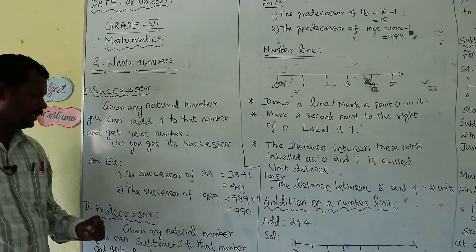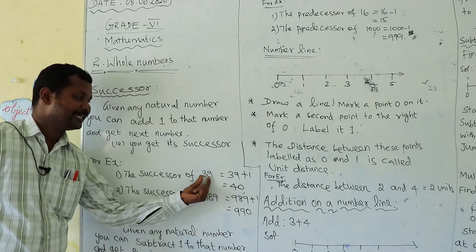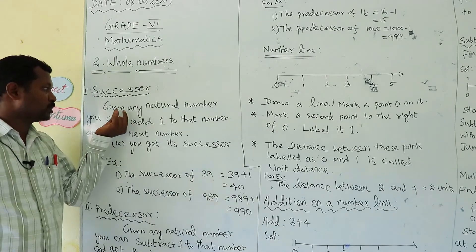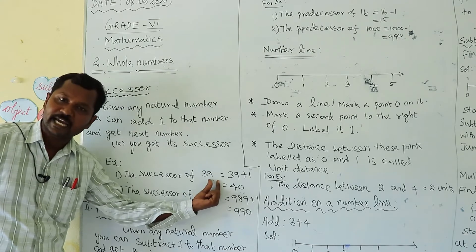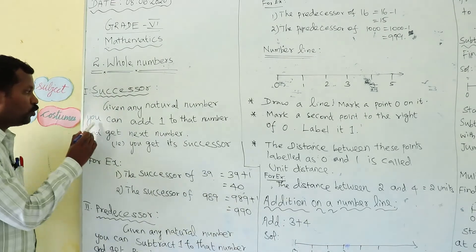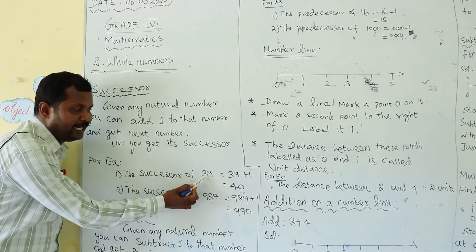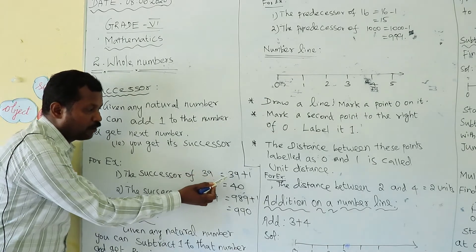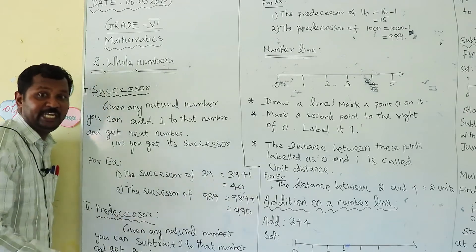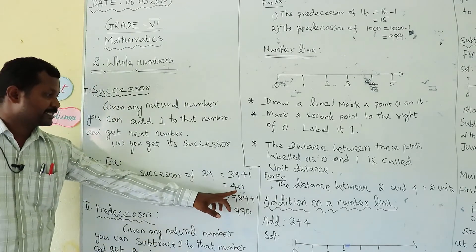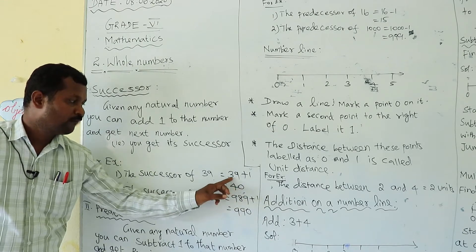For example, the successor of 39. 39 is a natural number. You can add 1 to get 40. So, 39 plus 1 is equal to 40, and 40 is the successor of 39.